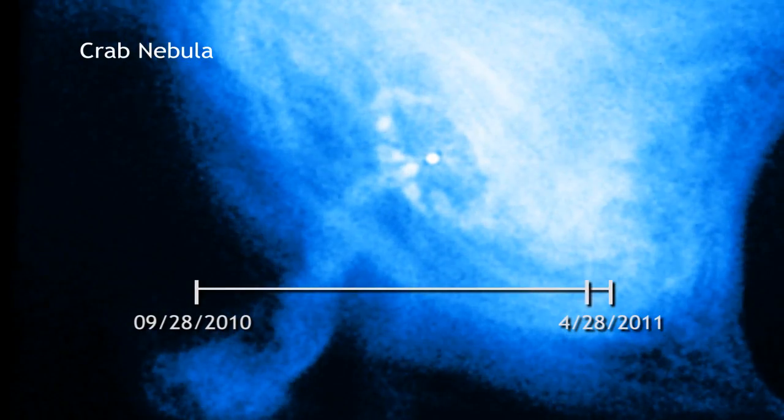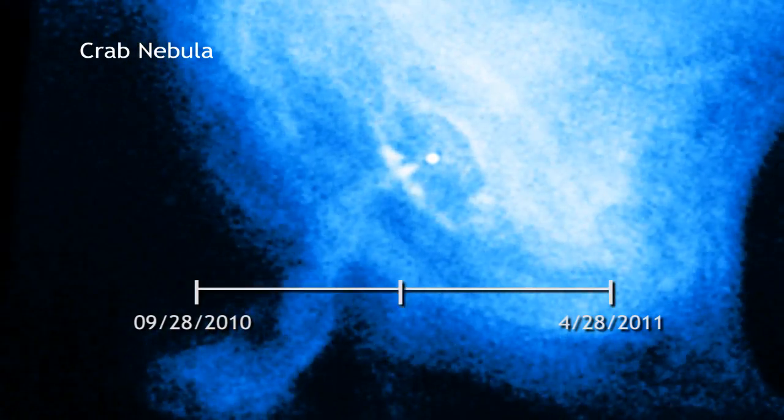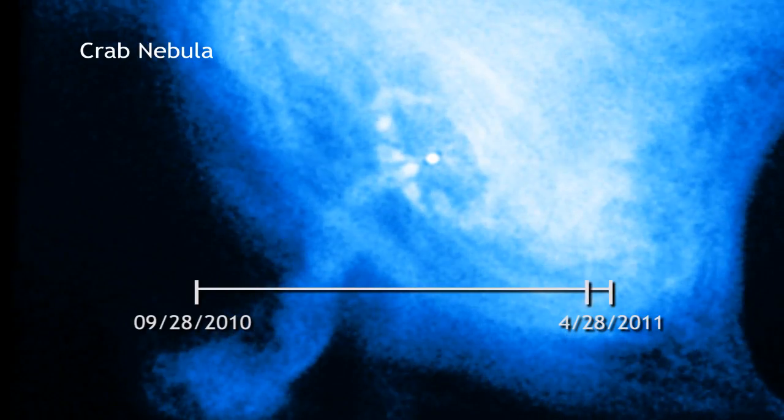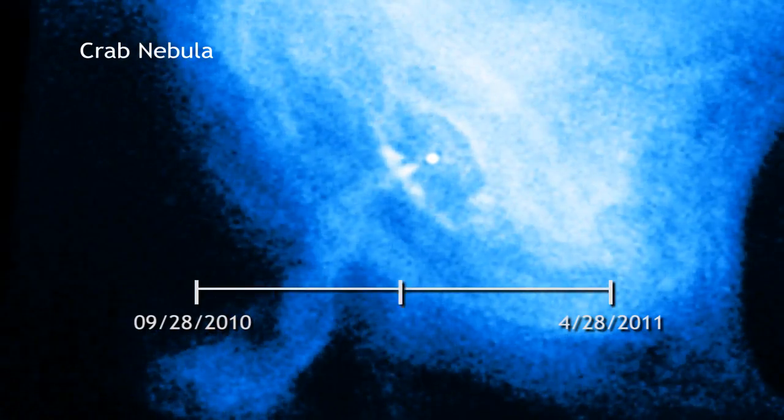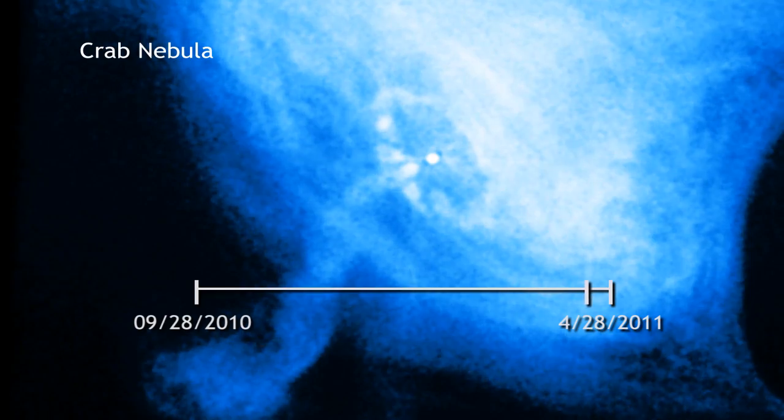During the huge flare, astronomers also studied the Crab with NASA's Chandra X-ray Observatory. Chandra's keen X-ray eye saw lots of activity, but none of it seems correlated to the superflare.